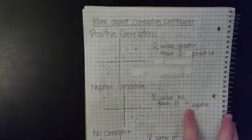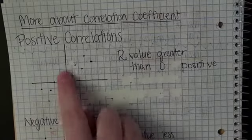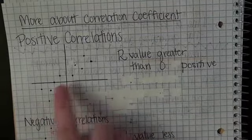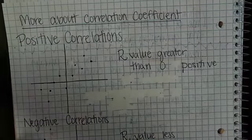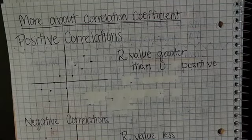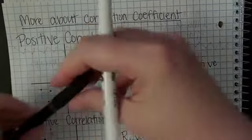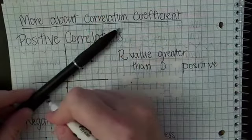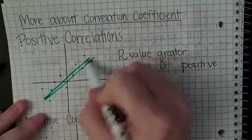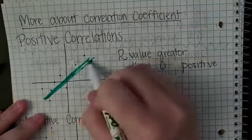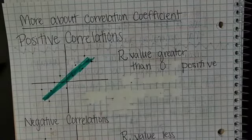If you have a positive correlation, I just made a graph and put random points. These do not have to be exact. Notice when I do this line of best fit, my estimate line would look like that. It would be a positive slope.